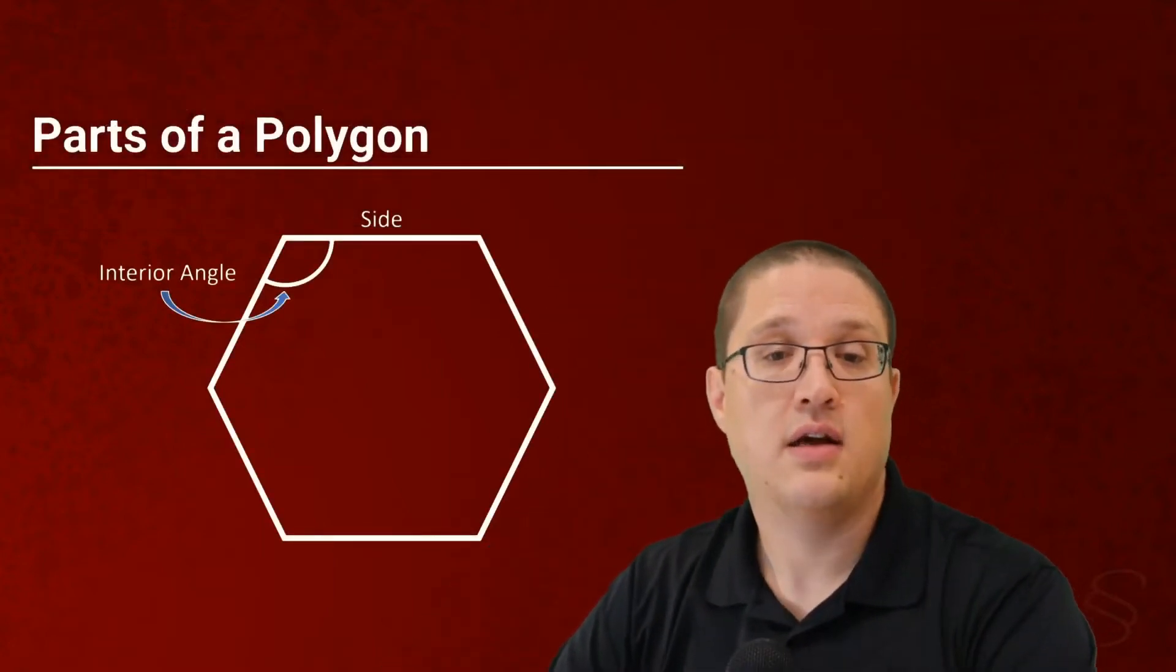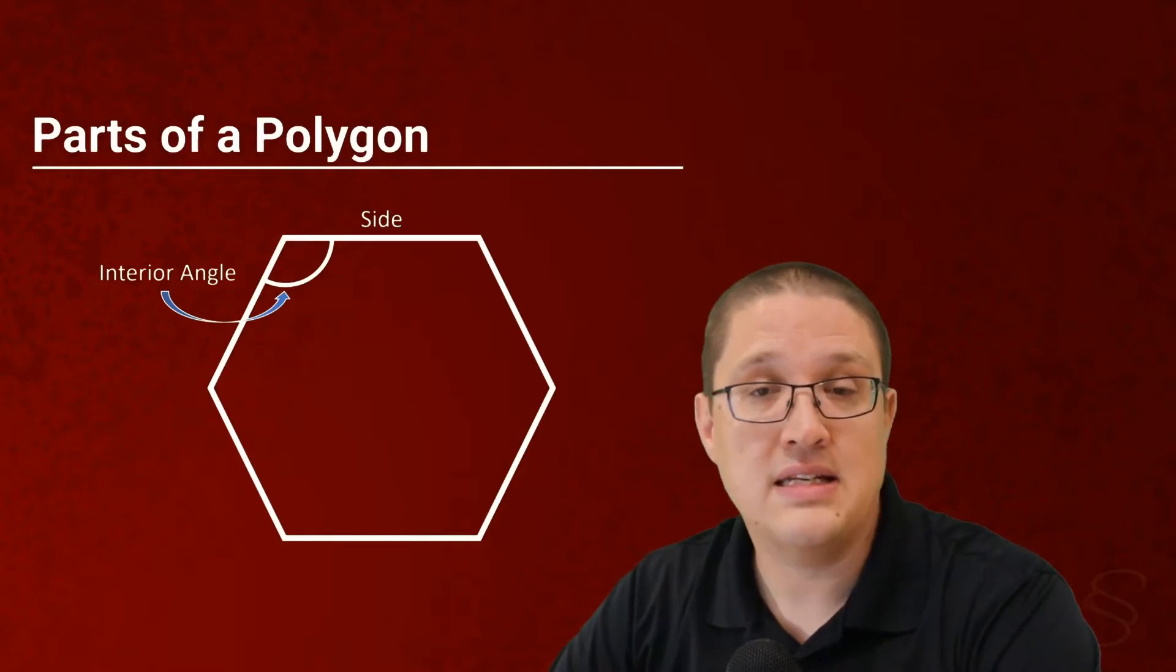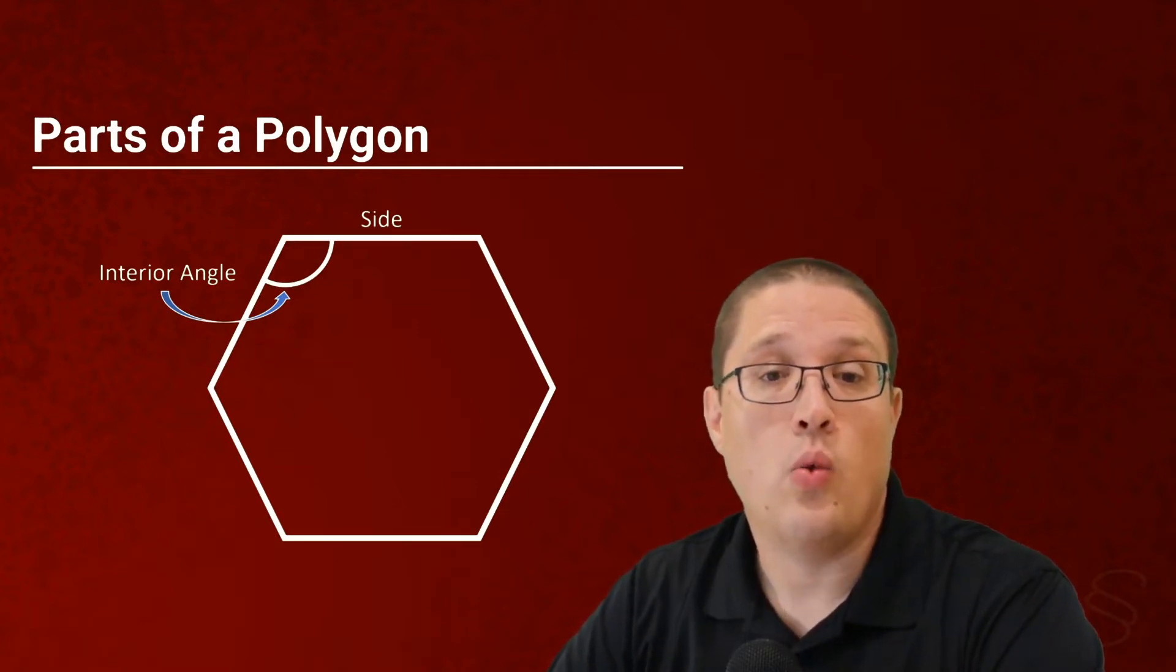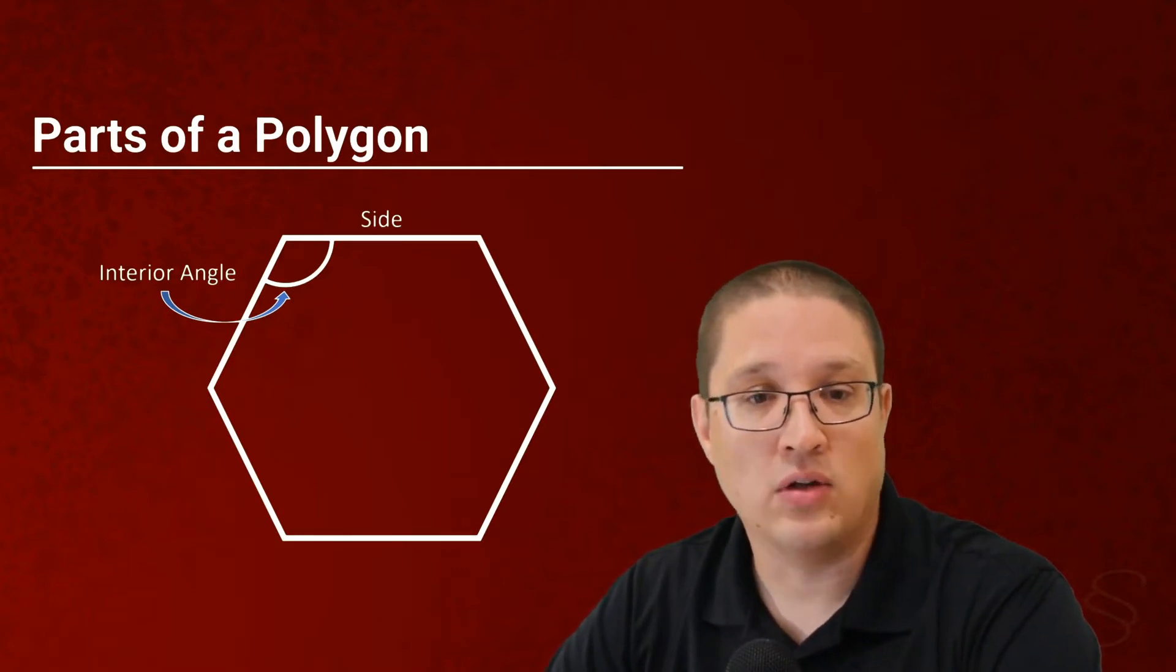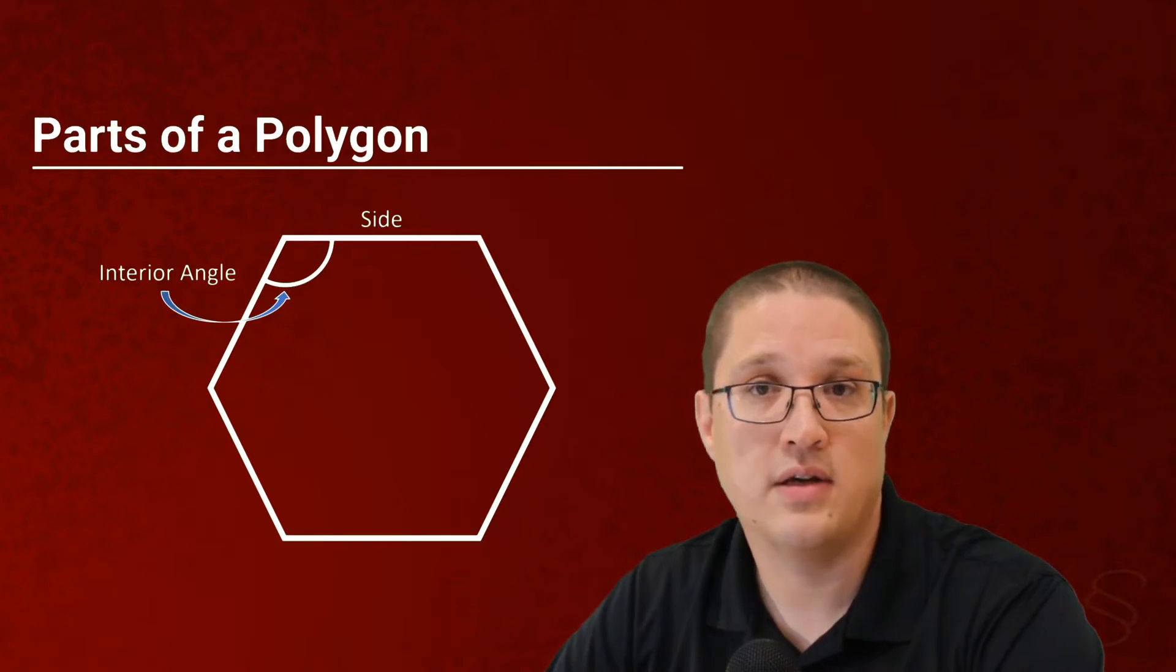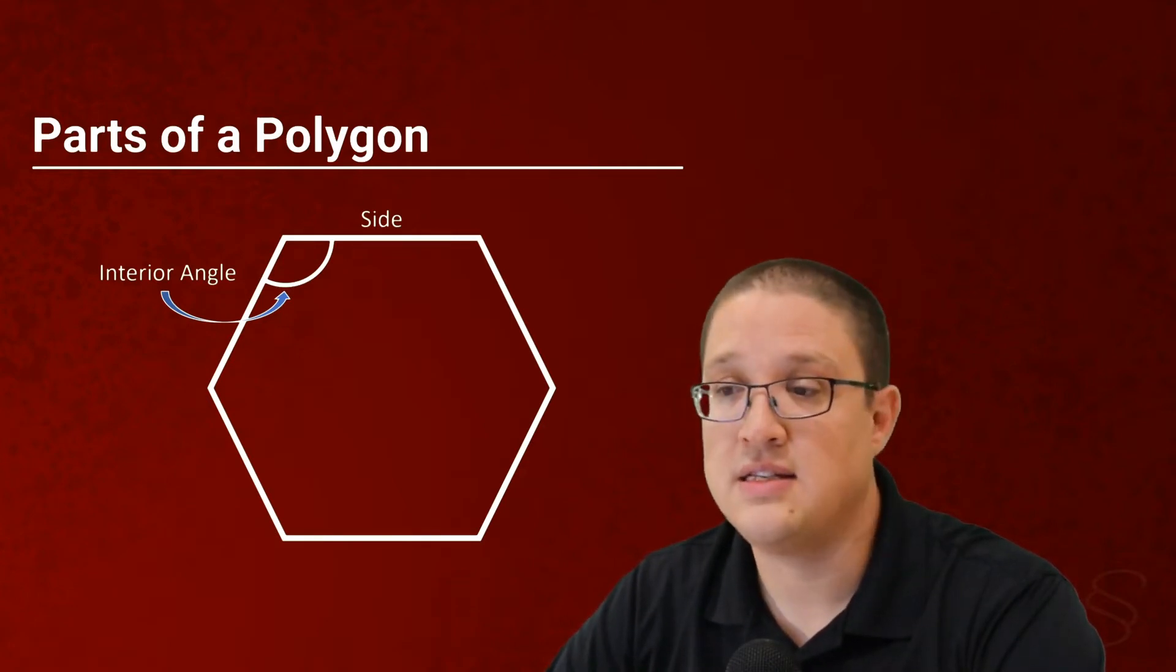So let's take a look at the parts of a polygon first off. In this case, we are looking at the interior angle of a regular hexagon. A hexagon has six sides to it. We know that the sides are the flat parts of this polygon, and the interior or internal angles. In this case, this is the interior angle.